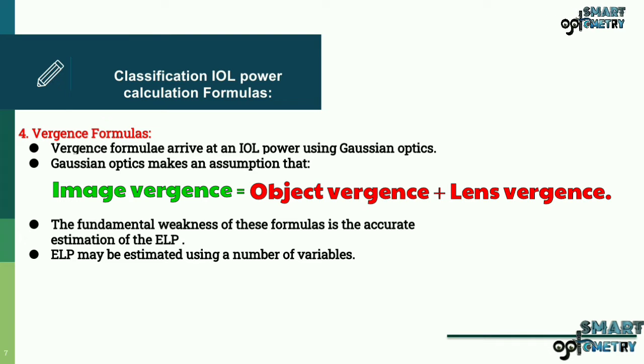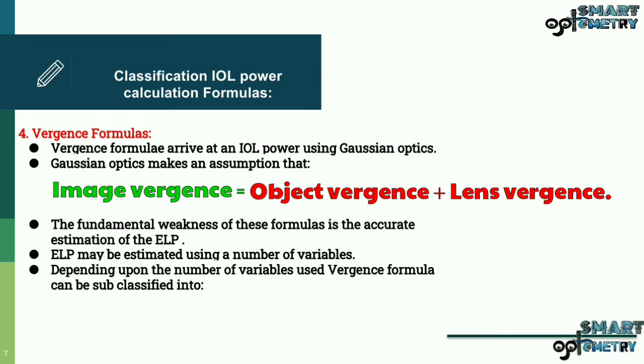The fundamental weakness of this formula is the accurate estimation of effective lens position. Effective lens position may be estimated using a number of variables. Depending upon the number of variables used, vergence formula can be subclassified into two variables, three variables, five variables, and seven variables formulas.